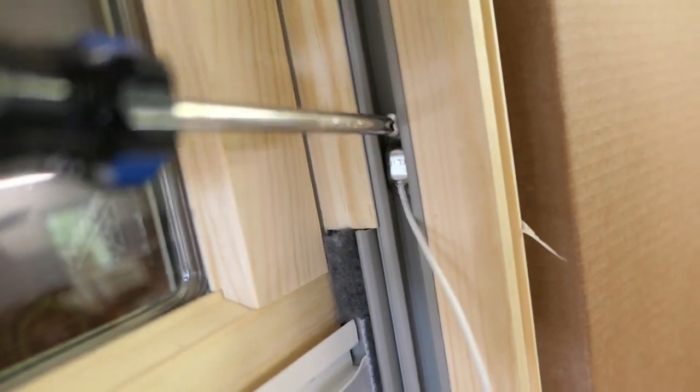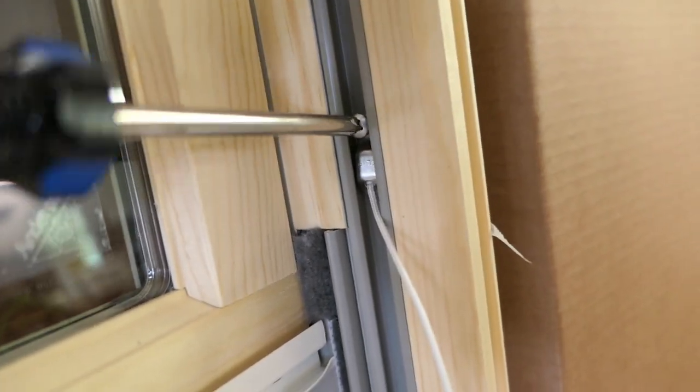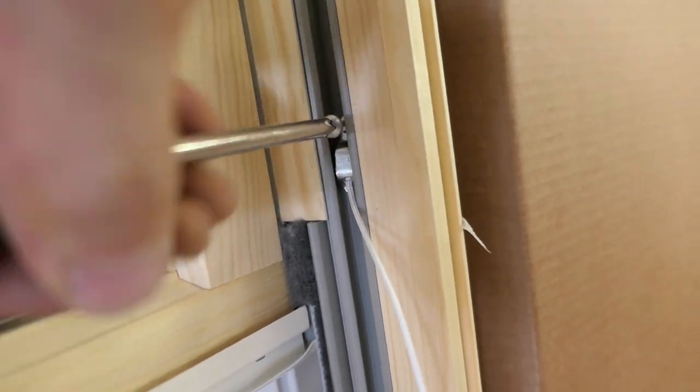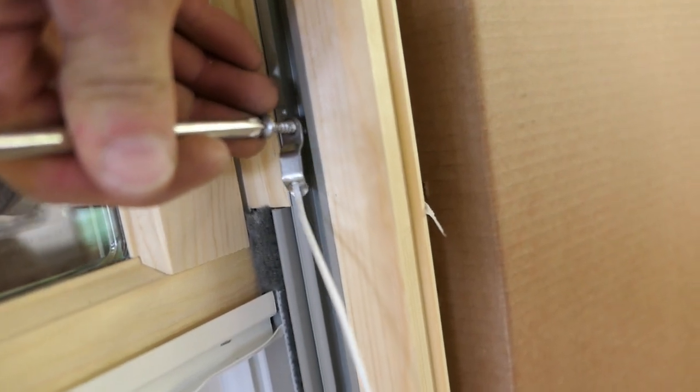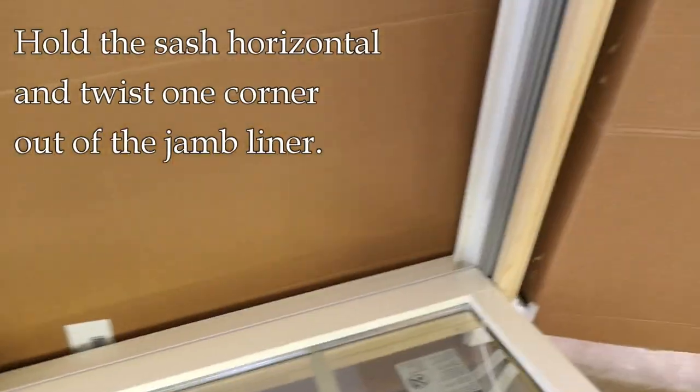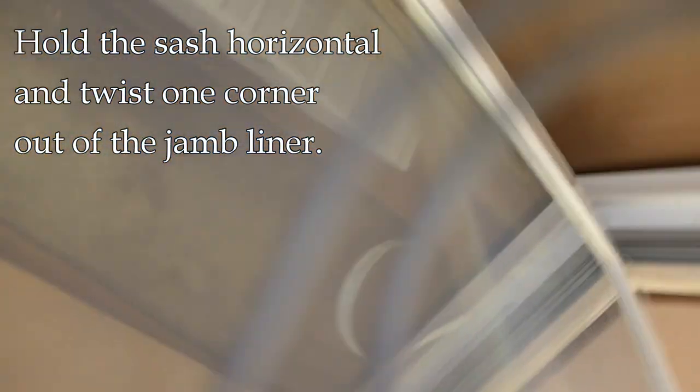To remove the sash completely, there's a spring-loaded string which is attached to the side of the jam. I'm just going to unscrew this Phillips screw on this little piece of hardware. There's one on the other side as well.